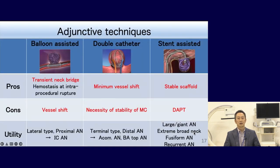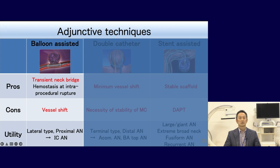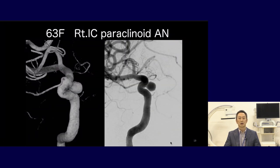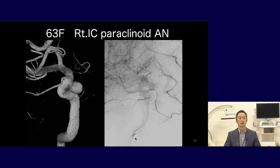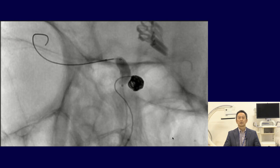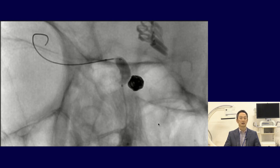Wide neck type and irregular shape aneurysms are difficult to treat with simple coil insertion, so we need to use adjunctive techniques in such cases. Balloon-assisted technique can seal the aneurysmal neck and is also used for getting hemostasis at intraprocedural rupture. However, the balloon catheter is a little stiff, so vessel shift can sometimes be a disadvantage. This case is a right IC paraclinoid wide neck aneurysm where coils were inserted without any protrusion using balloon-assisted technique, which also contributed to microcatheter stability.